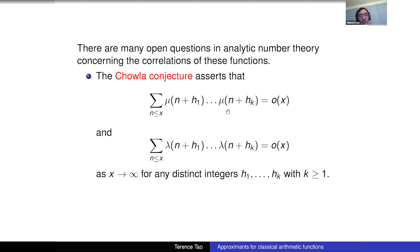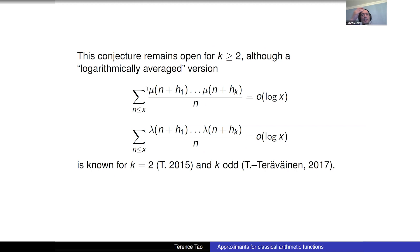The Chowla conjecture says the Möbius and Liouville functions behave like random sequences of ±1. It's still open. When k=1 it's equivalent to the prime number theorem, so we can prove it for k=1. For k≥2 it's not known. The best we can do is an averaged version: if you weight by 1/n the trivial bound is O(log x), but with logarithmic averaging we get some cancellation — at least for k=2 and for odd k, the latter proved about five years ago connected to the Erdős discrepancy problem.